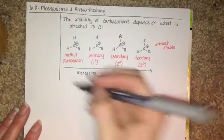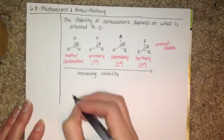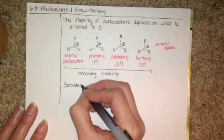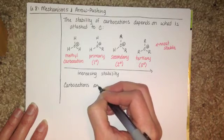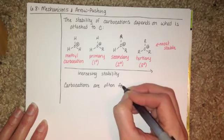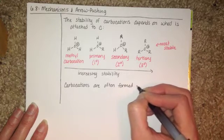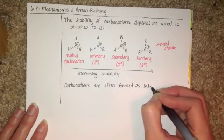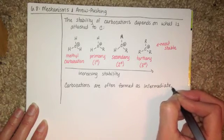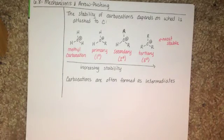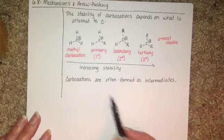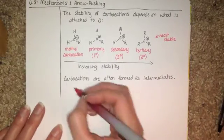Carbocations are often formed as reaction intermediates. And remember, intermediates are pretty stable, isolatable compounds. If a carbocation can rearrange to increase its stability, it will.